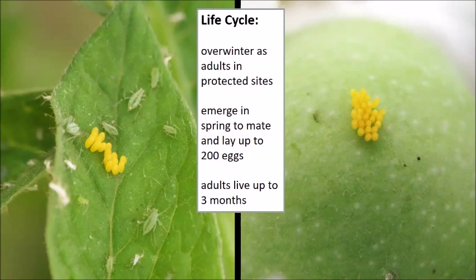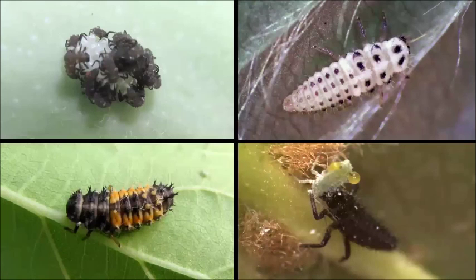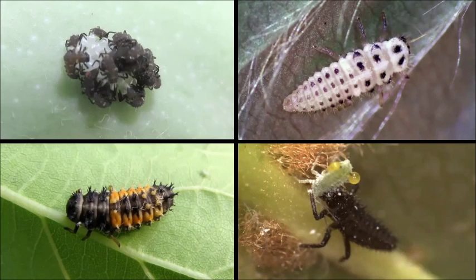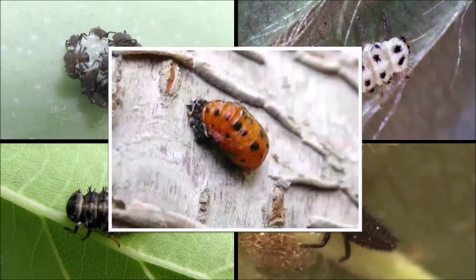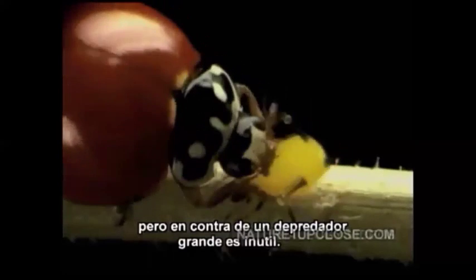Adults can lay up to 200 eggs and live about three months. The larvae disperse immediately after hatching, seeking food. Larvae look different depending on species — the lower-left is the most common lady beetle larvae you'd see. They'll pupate wherever they find a spot and emerge as adults.